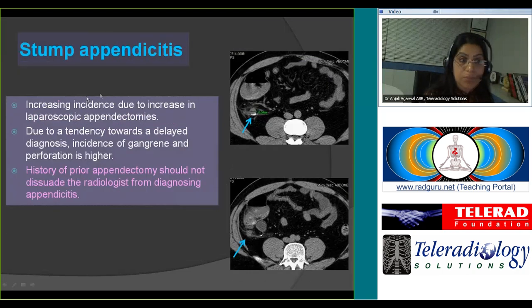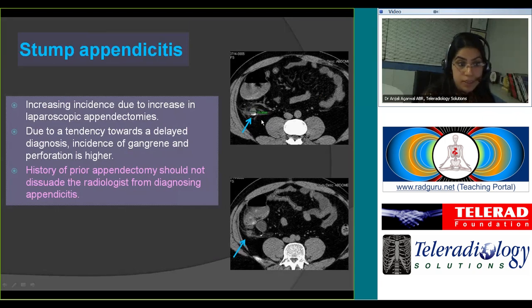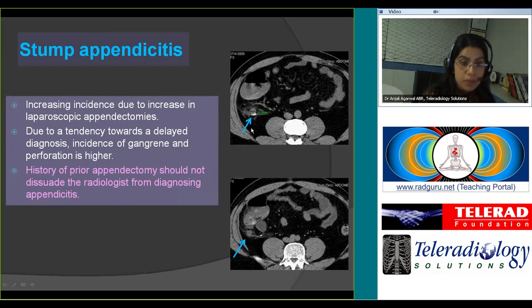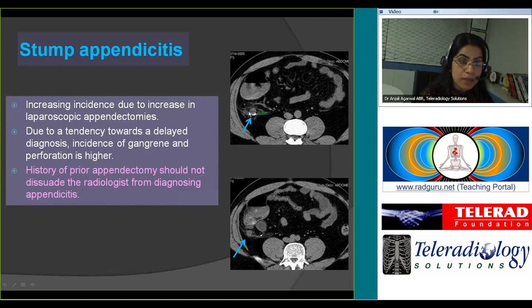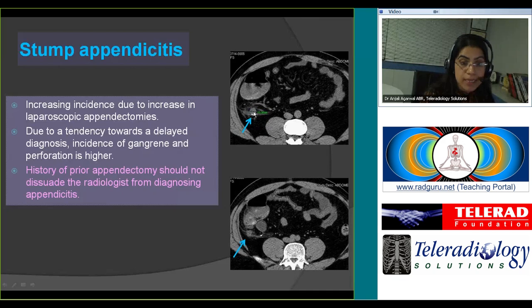The incidence of stump appendicitis has been increasing, primarily due to increased utilization of laparoscopic appendectomies. If a patient has a history of appendectomy, do not assume appendicitis is ruled out — during a laparoscopic procedure, the surgeon may have left a longer-than-usual stump, which can become inflamed. It's important to diagnose this in a timely fashion because there is an increased incidence of gangrene and perforation, as diagnoses often tend to be missed on initial evaluation.